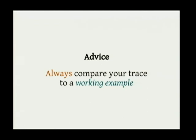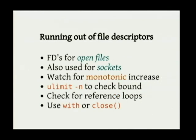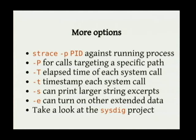Always, when you're looking at a trace for a program that's failing, compare it to a working example. There's nothing sadder than someone who sees something confusing in an strace, assumes that must be the problem, and spends hours on what's a perfectly normal thing to see. Running out of memory and running out of open file descriptors both have characteristic patterns you'll see in the strace. There are additional options like the elapsed time of each system call, and you can extend the size of the string excerpts you see.